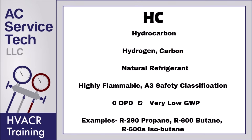HC refrigerant is hydrocarbon, made up of hydrogen and carbon. It is a natural refrigerant though highly flammable. It's in the A3 safety classification but has zero ODP and very low GWP. An example is R290, which is propane. R290 can be used in applications that already use R22, however it cannot be used as a retrofit for R22 due to its high flammability, but it can be used in commercial and industrial applications where proper safety controls are in place. R600a continues to be used more and more in domestic refrigeration systems that need a very low refrigerant charge.